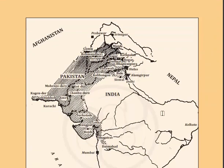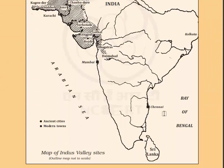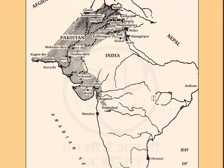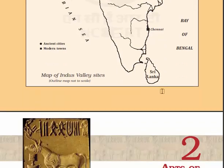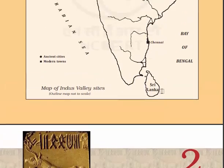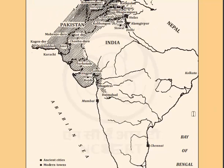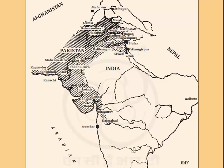With this we have come to the end of this chapter. Now let's have a look at this map — this is the map of the Indus Valley civilization, showing the sites across the Indian subcontinent including present-day India, Pakistan and Afghanistan.